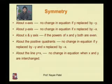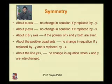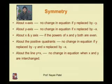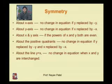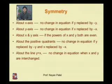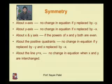Symmetry about both axes is like a circle. If there is no change in the equation when y is replaced by minus y and x is replaced by minus x, the curve is symmetric about the positive quadrant. And if there is no change when x and y are interchanged, the curve is symmetric about the line y equals x.